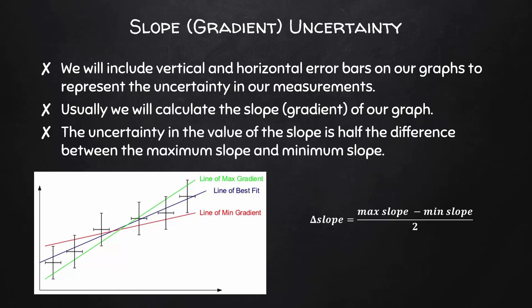There are a range of slopes that fit within these error bars. Our value of the slope is the slope of the line of best fit. And the uncertainty in the value of our slope is half the difference between the maximum slope and the minimum slope that fit within those error bars.